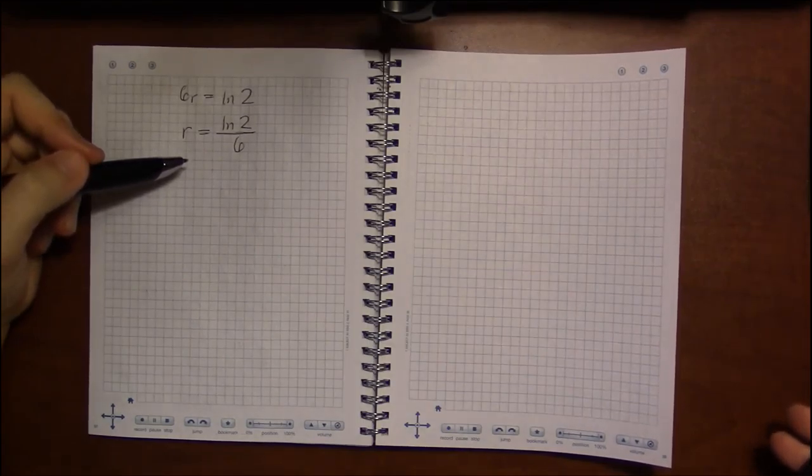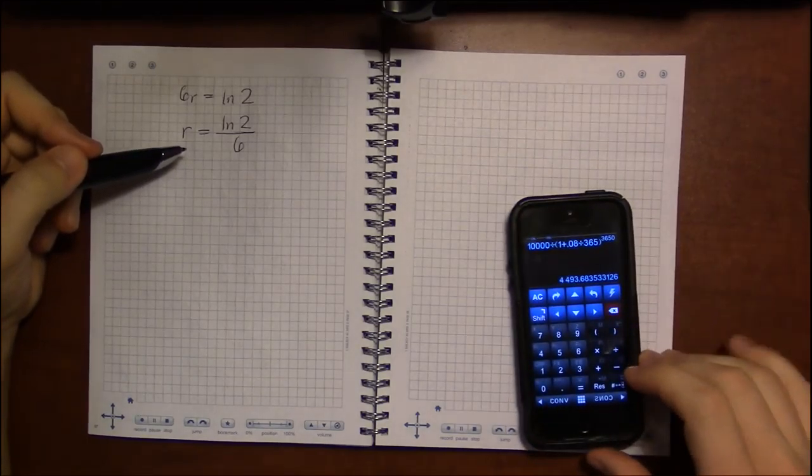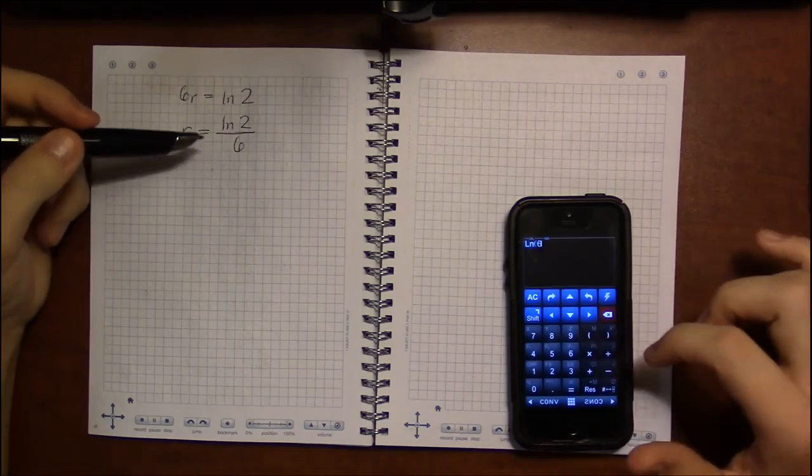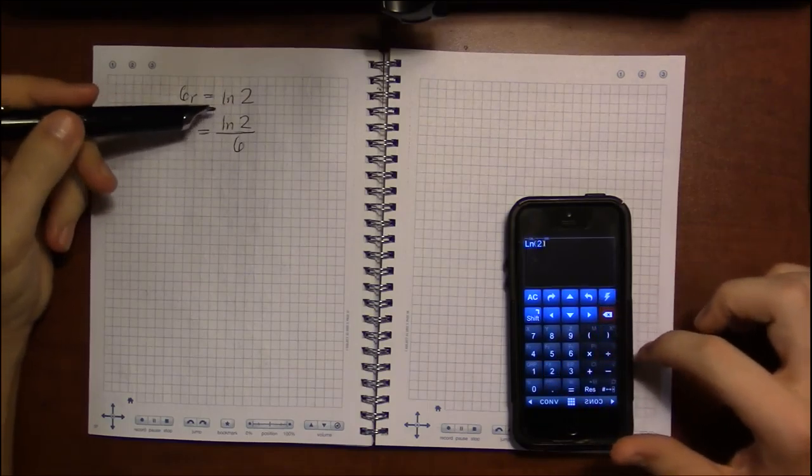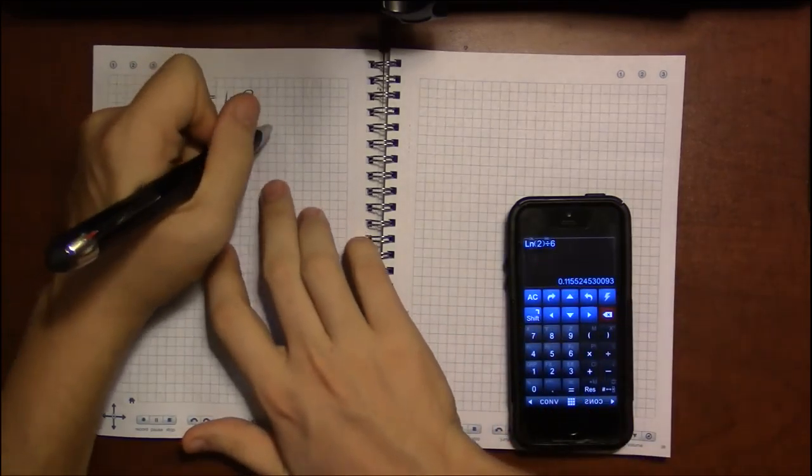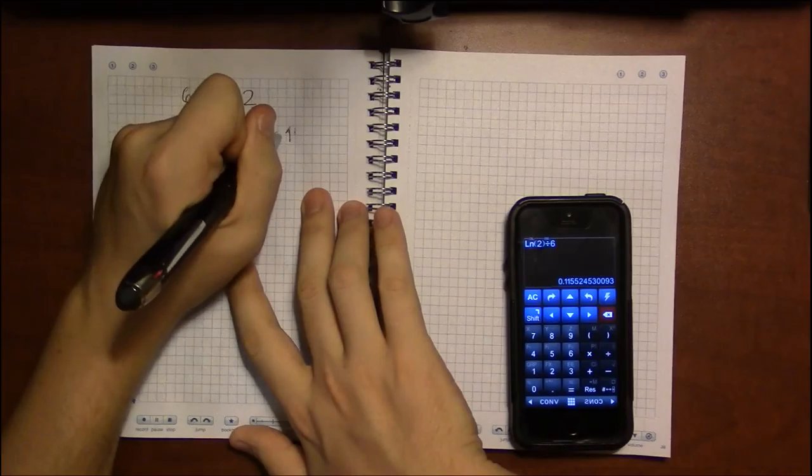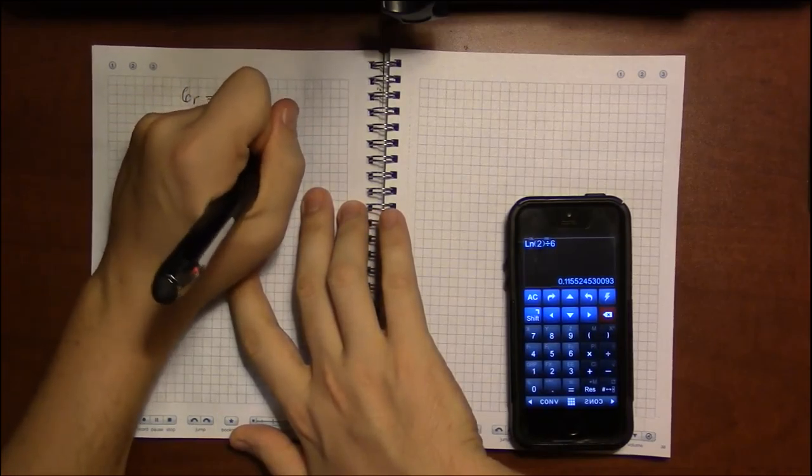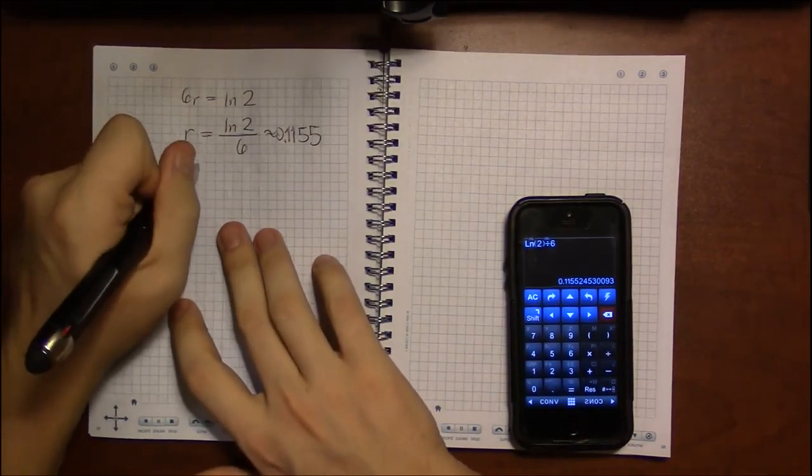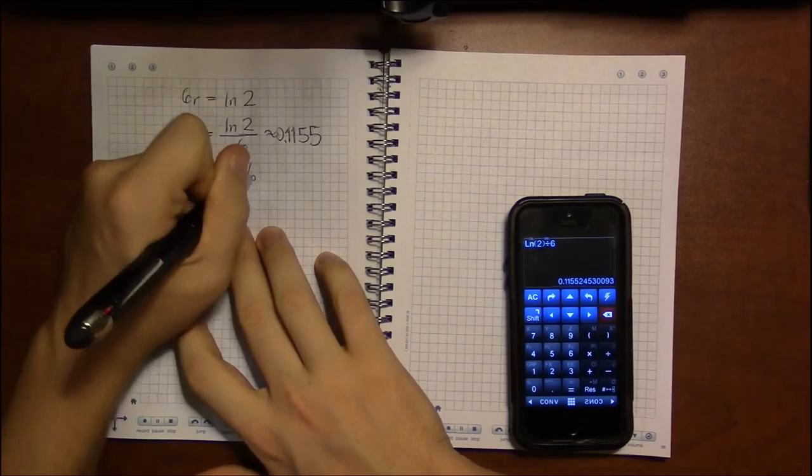And if we turn to our calculator to figure out what this should be, along with exponential buttons, most calculators have log buttons as well. Most advanced or scientific calculators. So log base 2 divided by 6, this is roughly 0.1155. So a little under 11.6% interest.